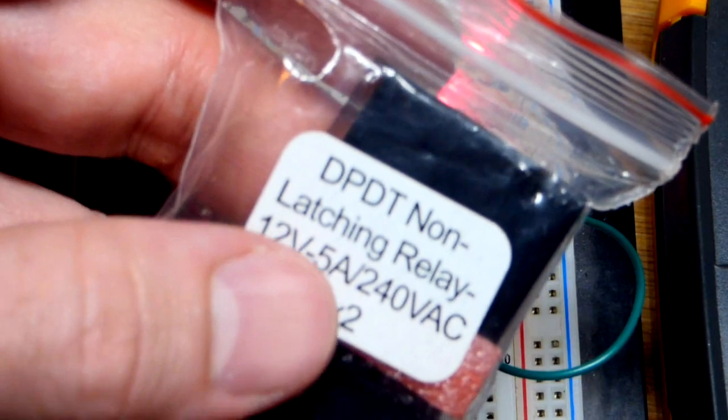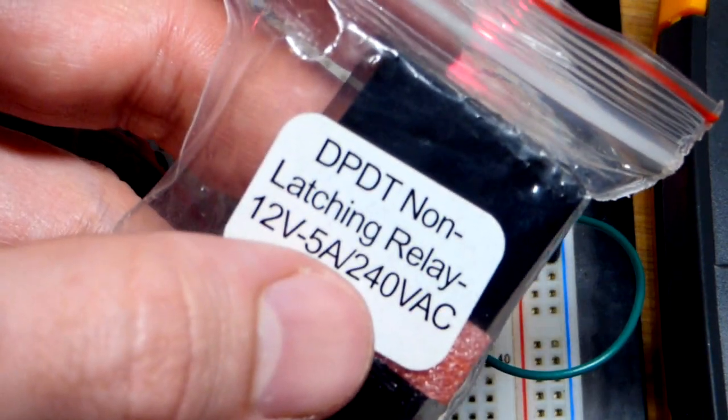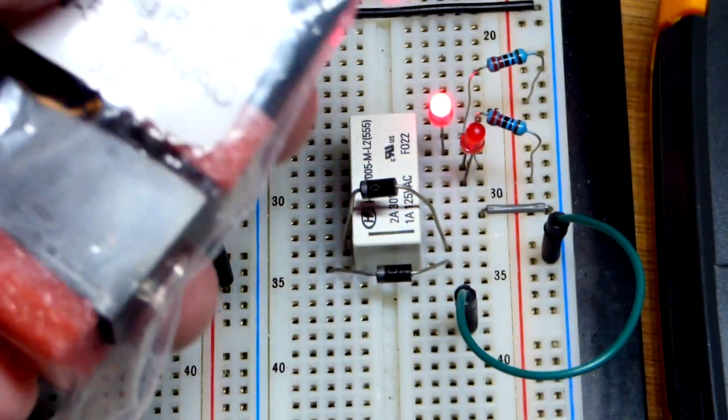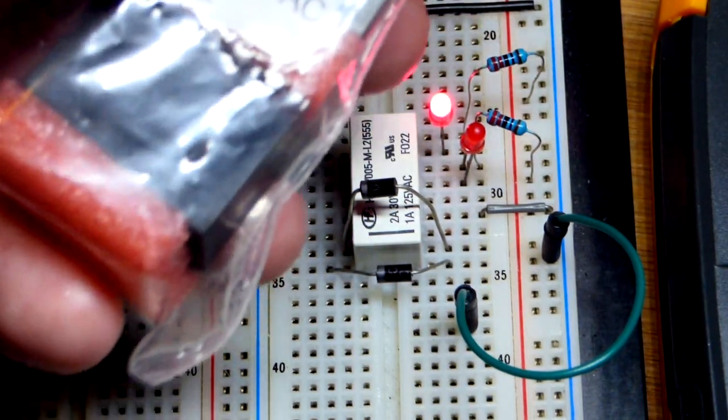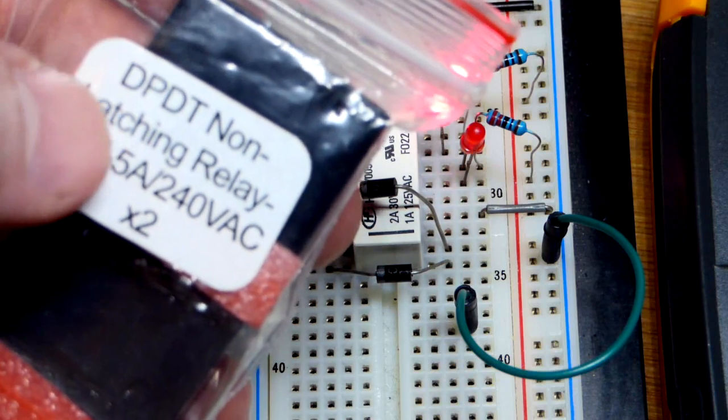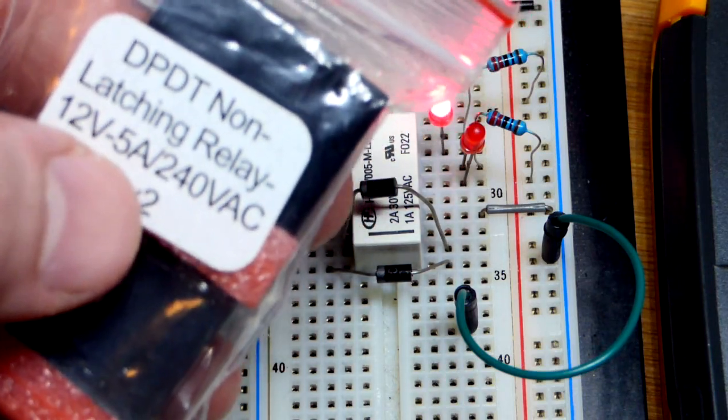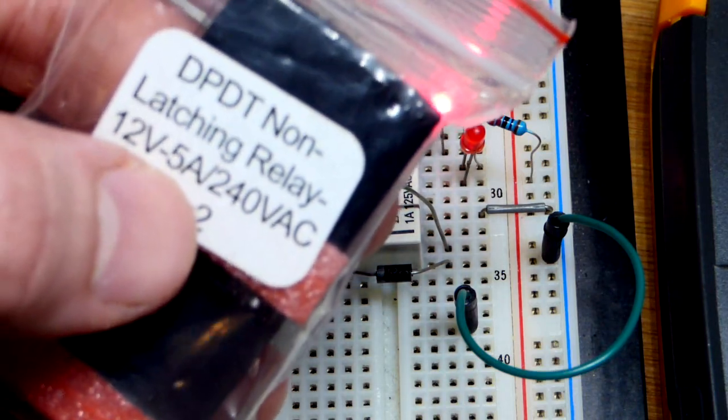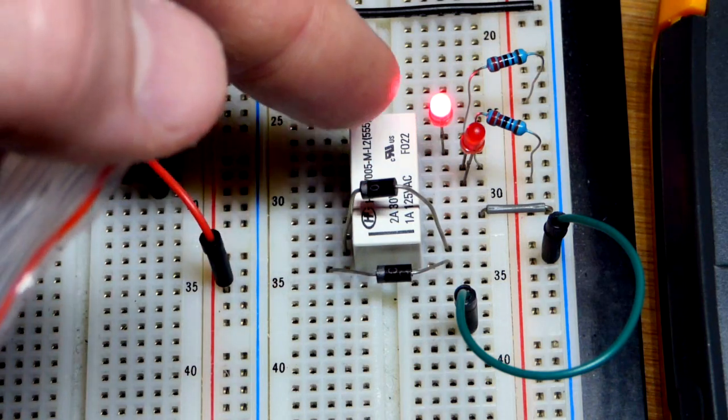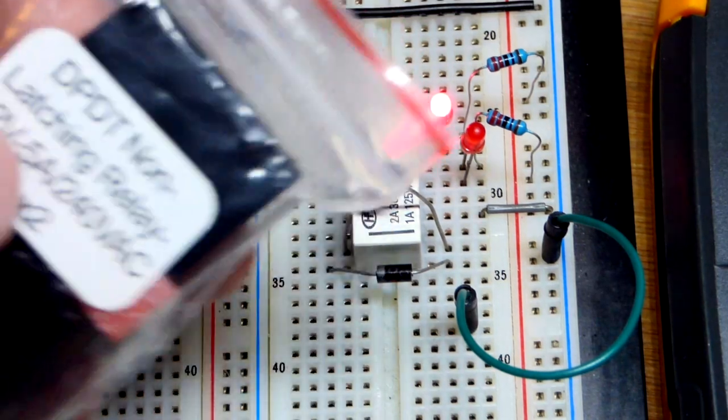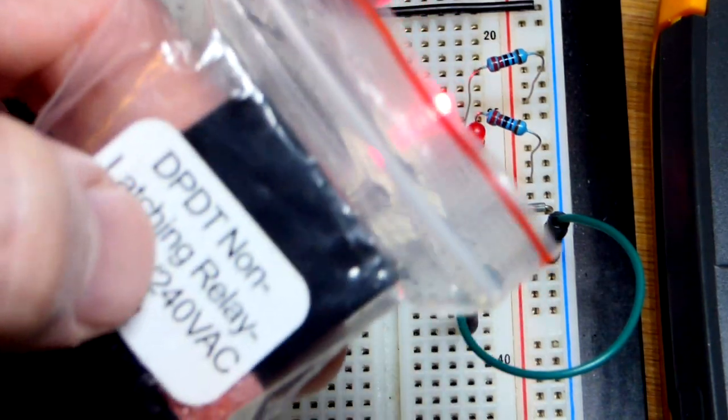A lot of relays, this one's non-latching, has one position that it prefers. If you're not energizing it, then one switch, in this case an LED, will be closed usually. A lot of them have a normally closed and normally open switch. This just has one that bounces back and forth.